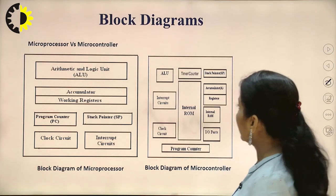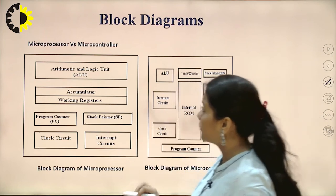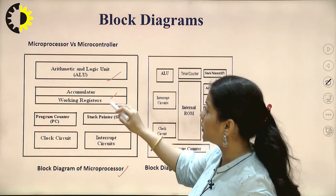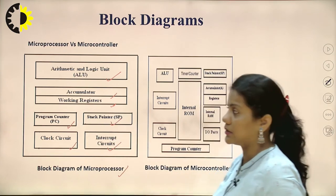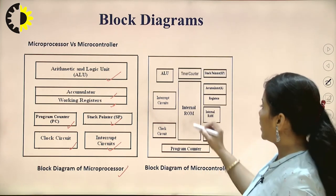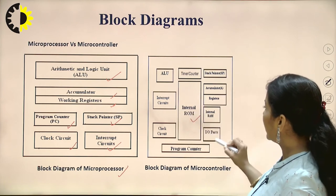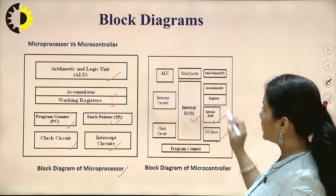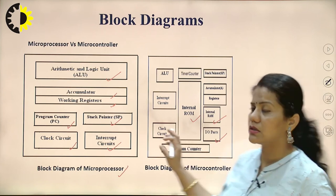We can understand the difference from a block diagram. The microprocessor contains ALU, accumulator, working registers, program counter, stack pointer, clock circuit, and interrupt circuits on a single chip. The microcontroller includes all of those together with internal ROM, internal RAM, and input/output ports on a single chip. This is the basic difference between the two.